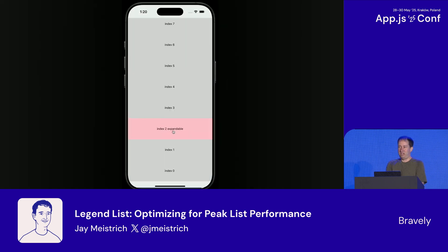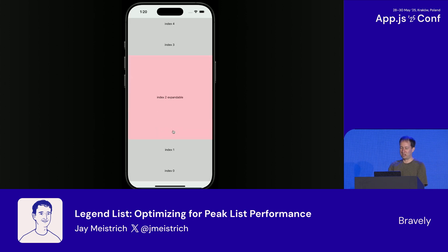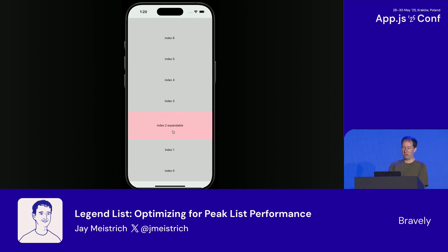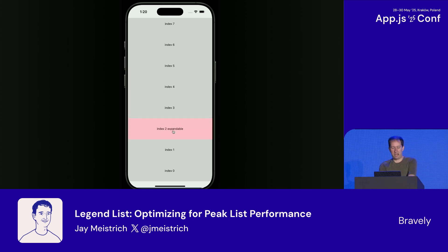Chat UIs are usually done by inverting the list, which kind of blew my mind when I found this out. It means you render with a transform scale Y of negative one, so the top of your list is actually at the bottom of the screen. That makes it hard to do animations and screen transitions, and it does a lot of really weird stuff — like when an item resizes, it goes up instead of down, which looks really silly. So LegendList does that without inverting. It just adjusts padding and uses maintain visible content position, and manages scroll positions to make it all work.